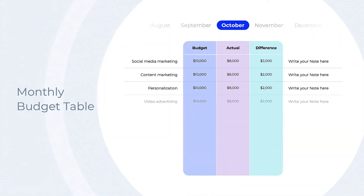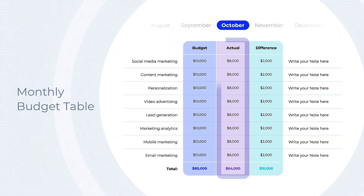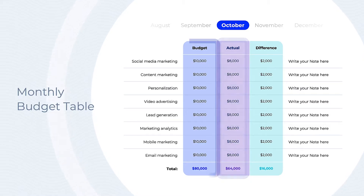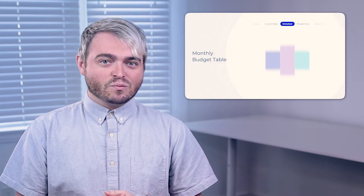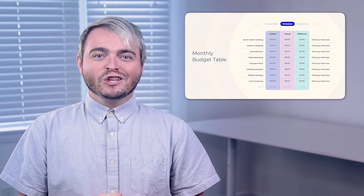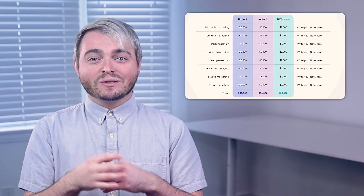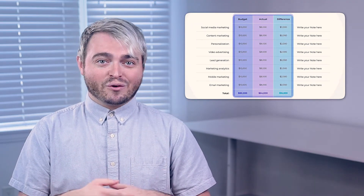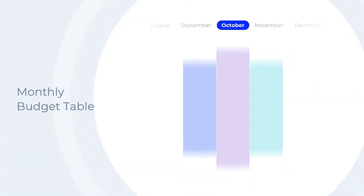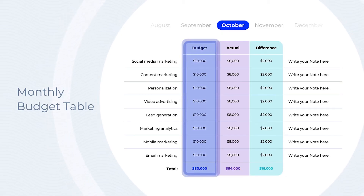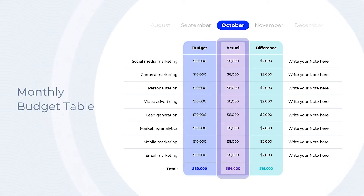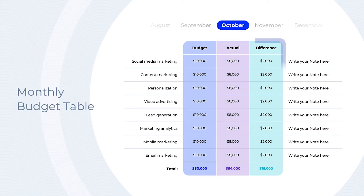A budget table measures the ideal financial numbers against the actual figures. The static budget amount represents the best-case scenario that companies can use to plan expenses and revenues. As the financial period progresses, whether it's a month or a quarter, look at how the actual data compares with what was assumed in the forecast. Budget tables show the difference between the static, proposed budget and the actual figures to analyze the magnitude of those differences and explore why they happened.